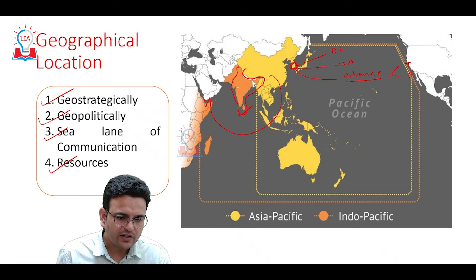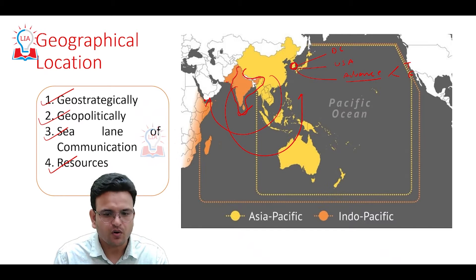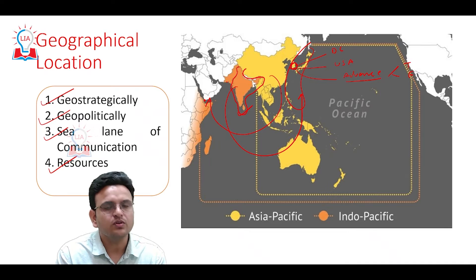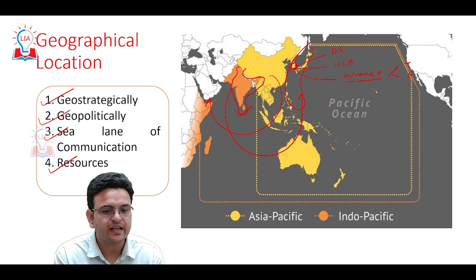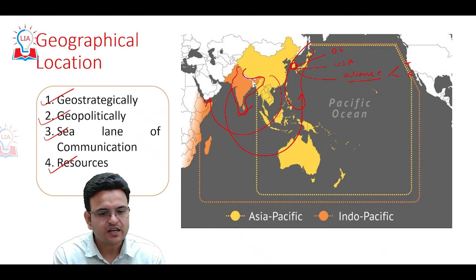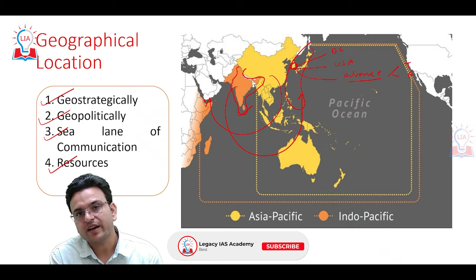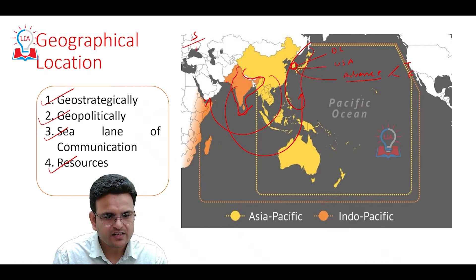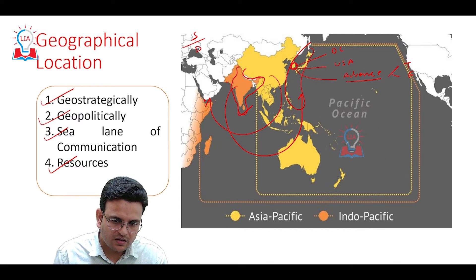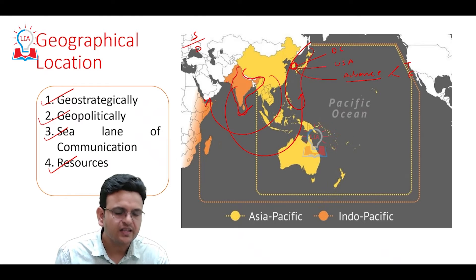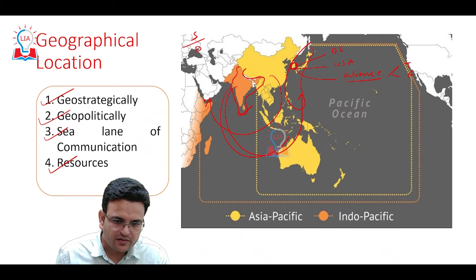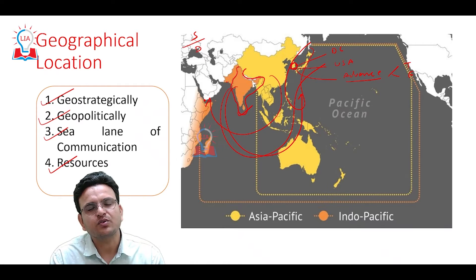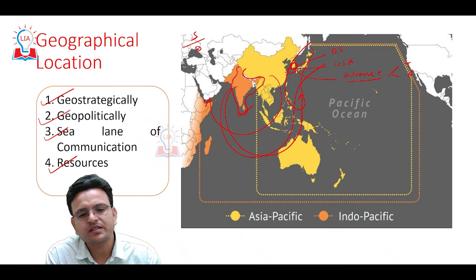India has also tried to increase its influence in the South China Sea and the Western Pacific region. South Korea, being very close to China, is strategically important for India — just as Sri Lanka is strategically important for China because it is close to India. South Korea is important for security, defense, and trade route protection, and also for metallic and other oceanic resources.